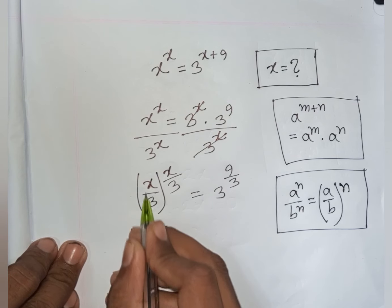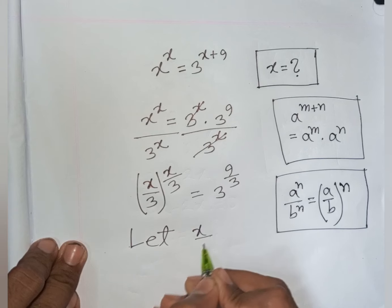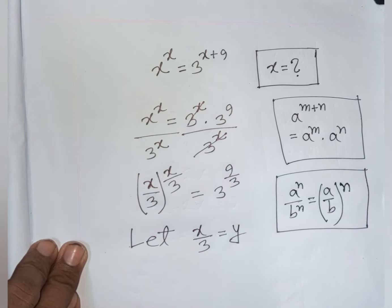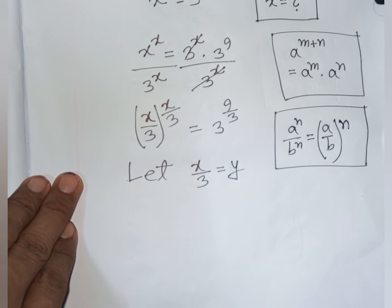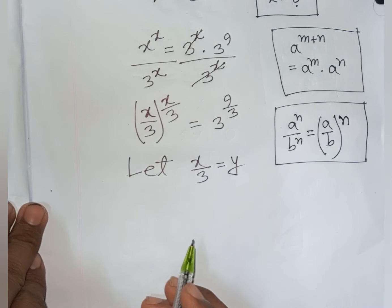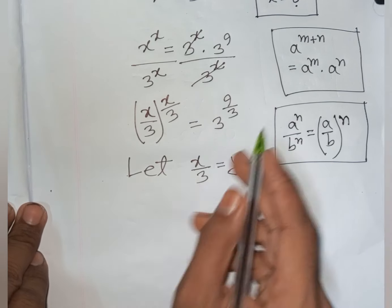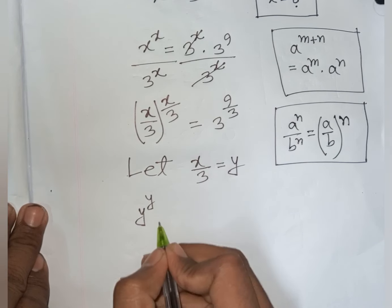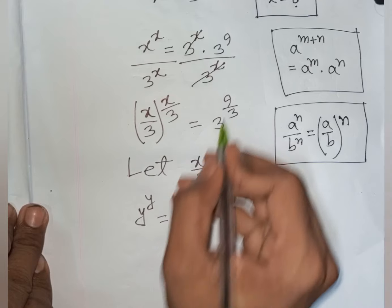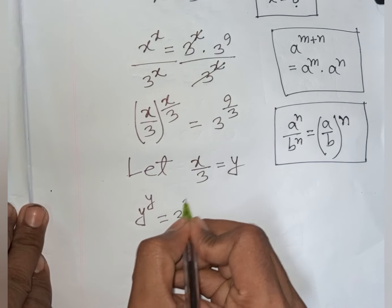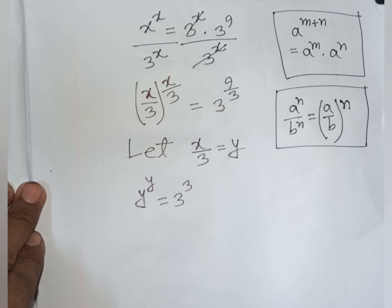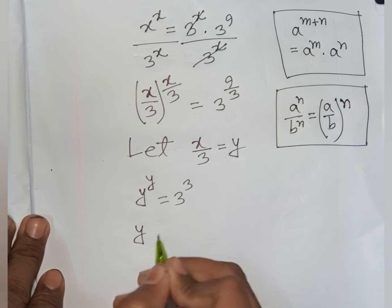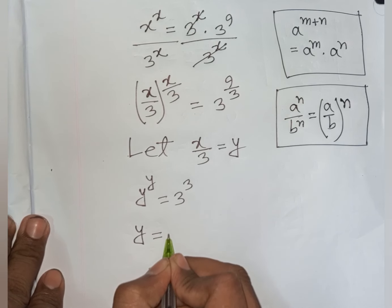Let x/3 be substituted by y. Our equation becomes y^y = 9/3, which simplifies to y^y = 3. From here, y = 3.